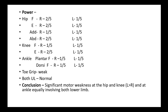Toe grip is weak. Both upper limbs are normal in power. Conclusion: there is significant motor weakness at the level of hip and knee — left more than right — and at the ankle equally involving both lower limbs. So it is not a symmetric neuropathy; it is asymmetric neuropathy with radiculopathy.